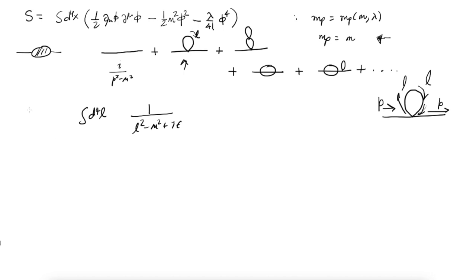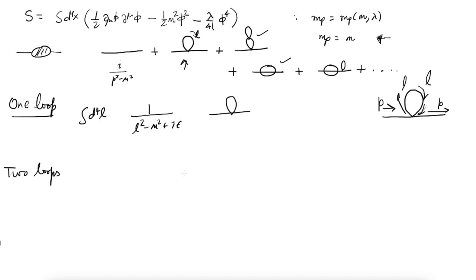This is the situation at one loop — the diagram diverges. Let's see what happens at two loops. We have all these diagrams. Let me draw this diagram clearly so we get some practice with Feynman diagrams so that the later discussion becomes easier.